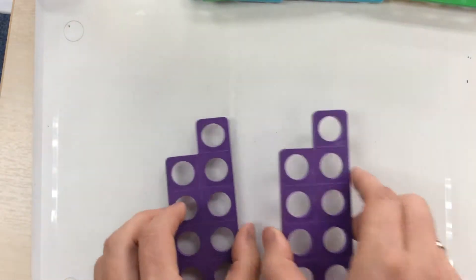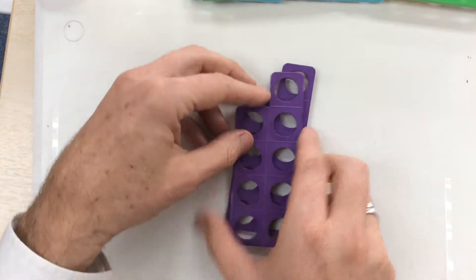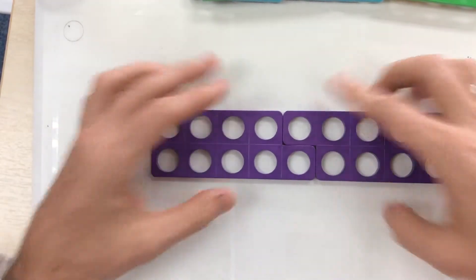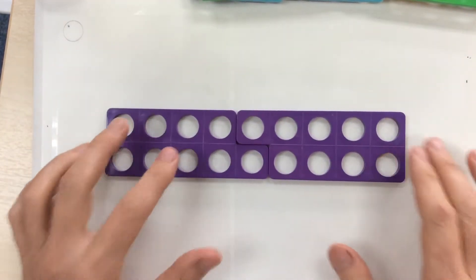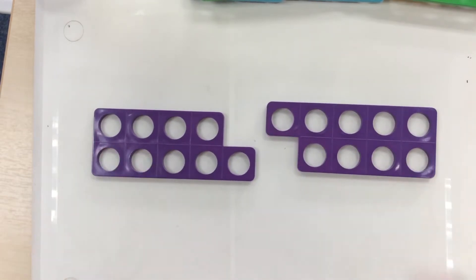Here I've got two nines. Half of 18 is 9.